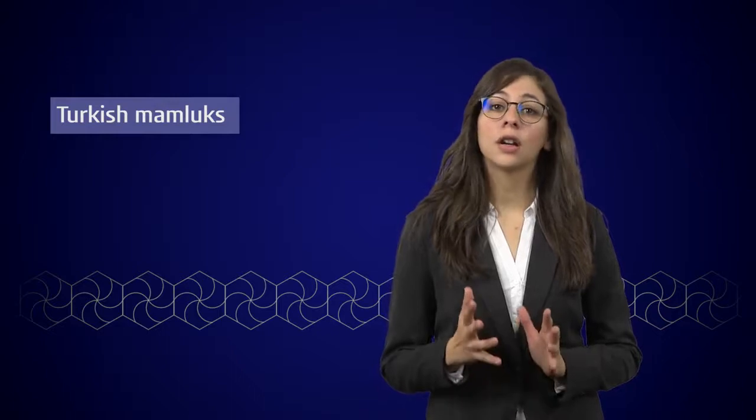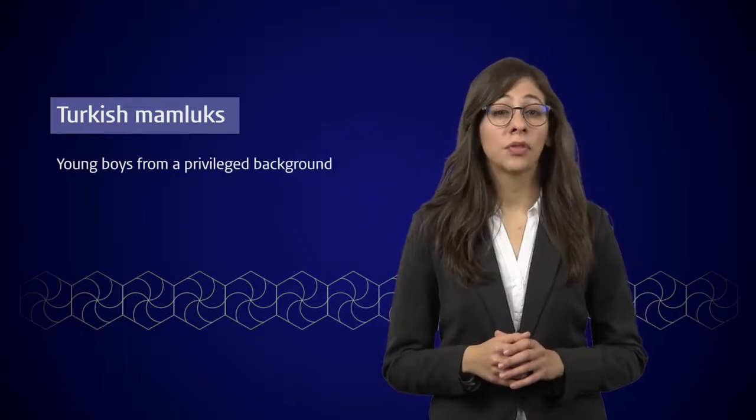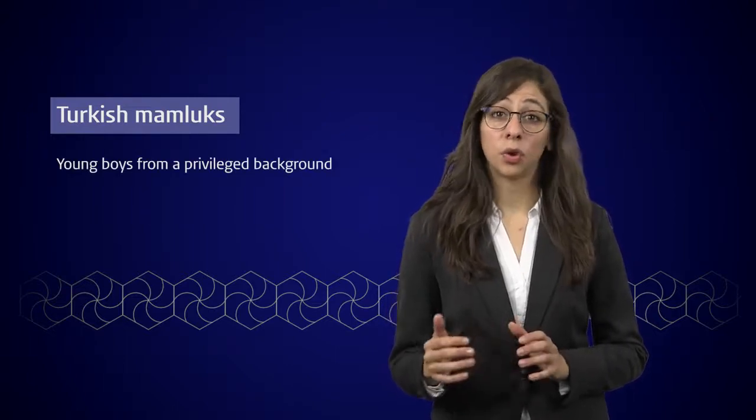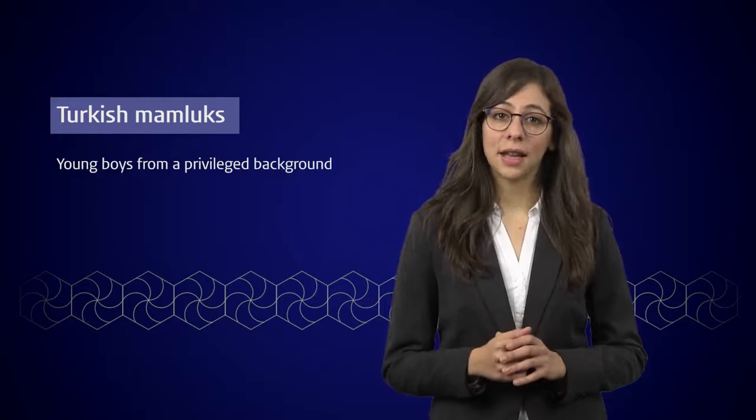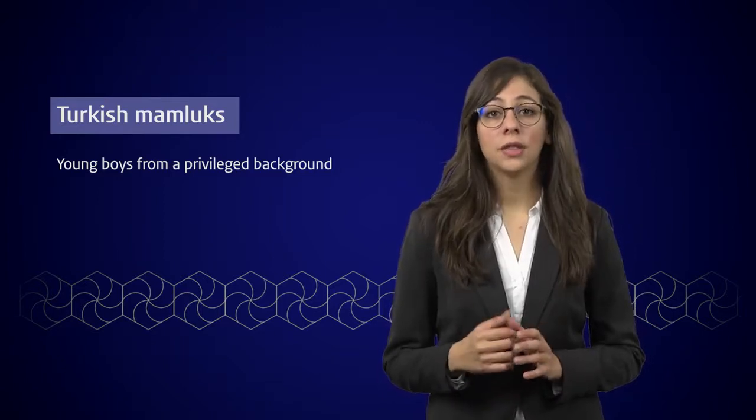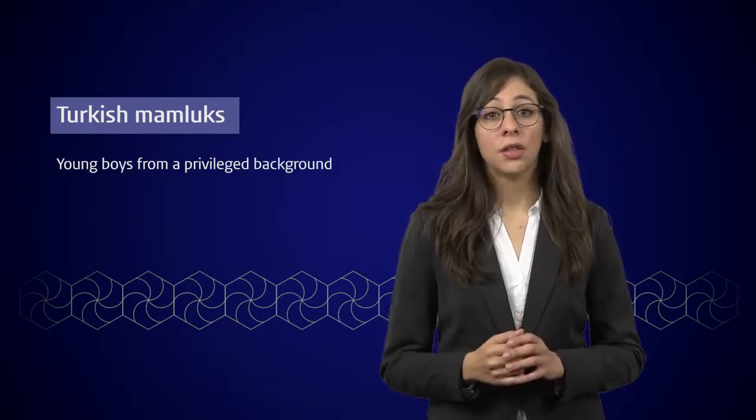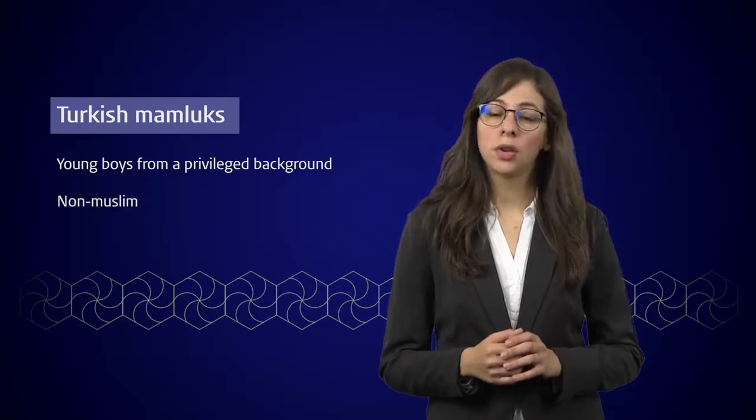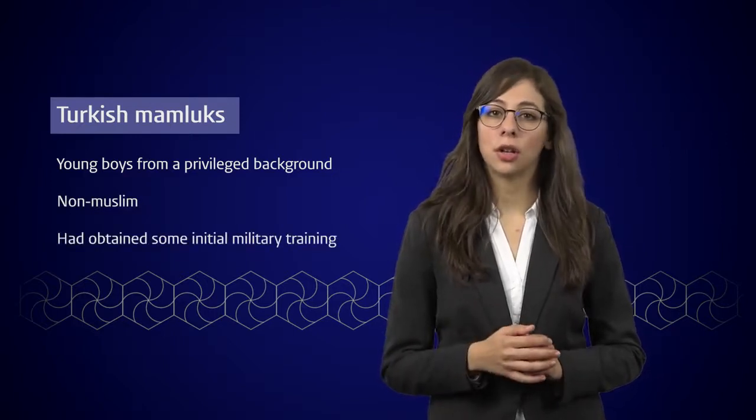In an attempt to build a strong, specialized and loyal army, Muslim rulers turned to slaves. Young boys from a privileged background, some were from royal descent, were bought as slaves. Typically they were around 12 years old. They had to be non-Muslim and usually they had already obtained some initial military training.